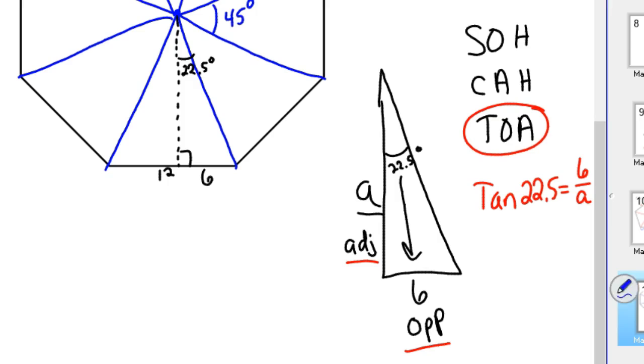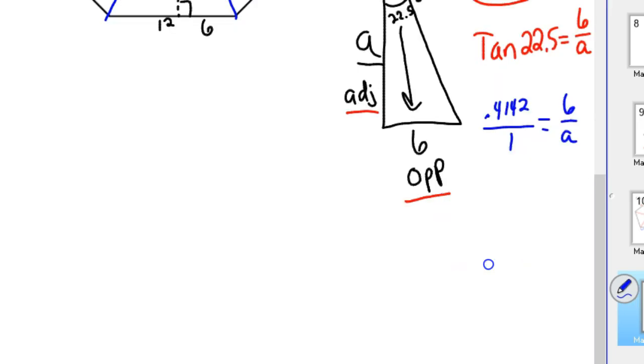So instead of tangent 22, we're going to put 0.4142 over 1 equals 6 over A. And cross-multiply. So 0.4142 times A equals 6. And so then divide by the 0.4142. So A, or the apothem, is 6 divided by 0.4142.